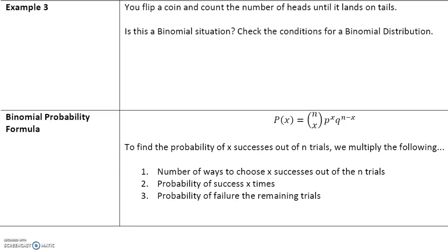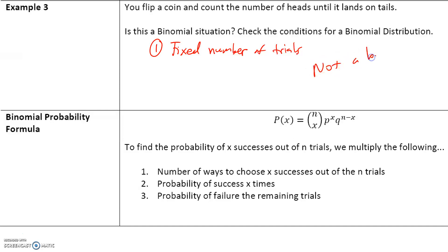Here is another example: you flip a coin and count the number of heads until it lands on tails. Is this a binomial distribution? Let's check the conditions. Number one: we need a fixed number of trials. Do we have a fixed number of trials? We actually don't, because we keep flipping until it lands on tails. What if the coin just keeps landing on heads over and over again? In that case, the experiment would continue forever and we would not have a fixed number of trials. So this is not a binomial distribution.